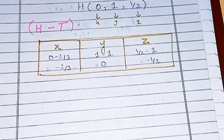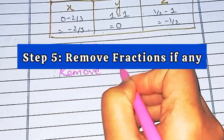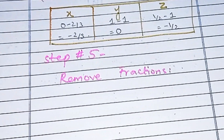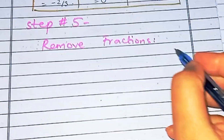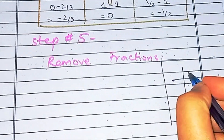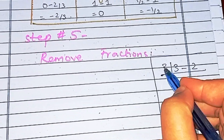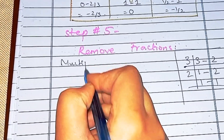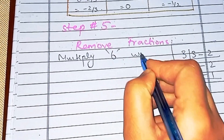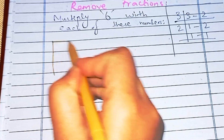We can see there are fractions involved, and step five is to remove fractions if we have any. We remove fractions by multiplying the LCM of the denominators with each of these numbers. The denominators are 3 and 2 — there is no denominator for the middle term. Taking the LCM: 3 and 2 gives us 6. We will multiply 6 with each of the numbers we obtained above.